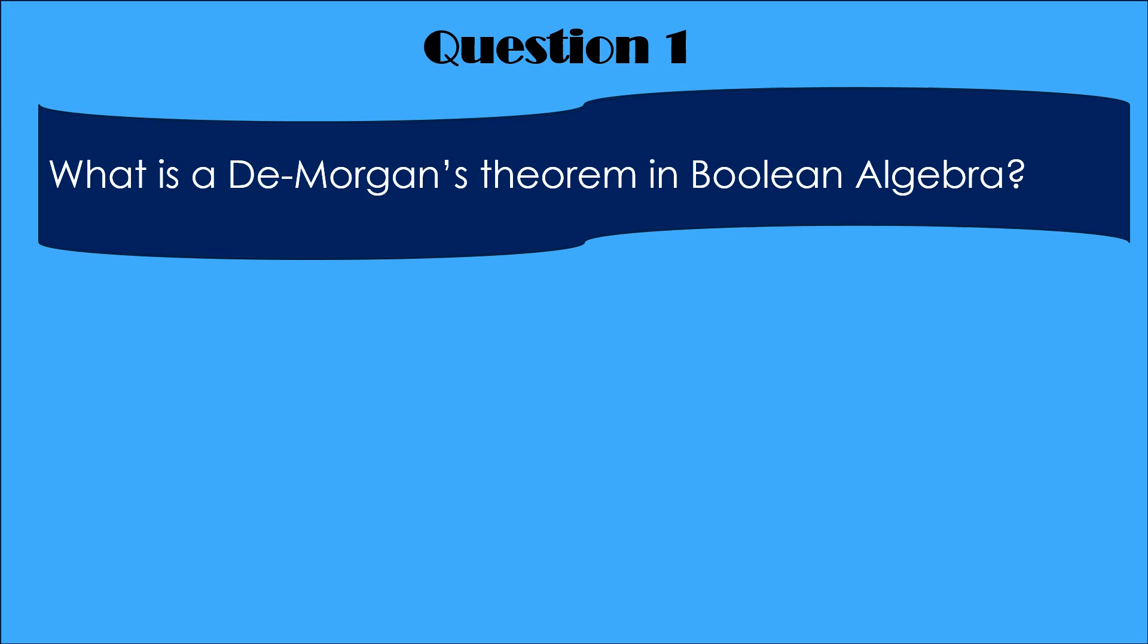Question number 1 is, what is a De Morgan's theorem in Boolean algebra? And the answer is, A plus B bar is equal to A bar dot B bar. So this is the first law. AB bar is equal to A bar plus B bar. This is the second De Morgan's theorem.